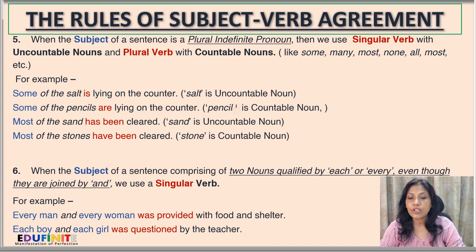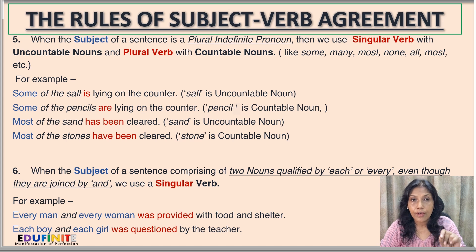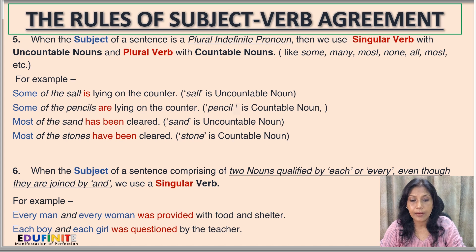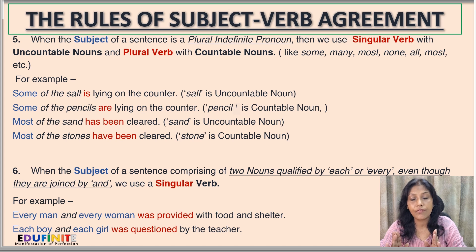Rule number six: when the subject of a sentence is composed of two nouns qualified by 'each' or 'every', even though they are joined by 'and', we use a singular verb. Previously we said two singular nouns joined by 'and' take a plural verb, but if they are qualified by 'every', we use a singular verb. For example: 'Every man and every woman was provided with food and shelter' — since the word 'every' is there, we use 'was'.